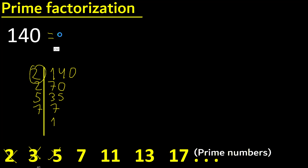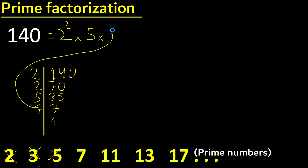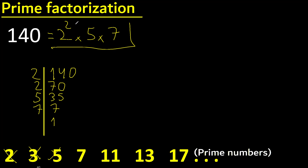Here: 2 appears 2 times, 5 appears 1 time — exponent is 1, therefore equal the same number. 7 appears 1 time. Prime factorization.